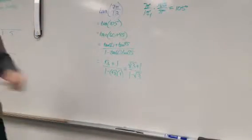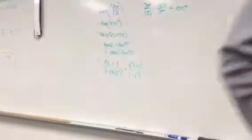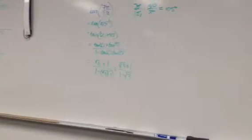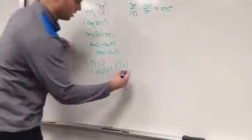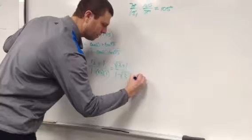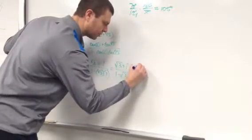You can't leave radicals in your denominator. So that's where you would multiply the top and the bottom by the conjugate of the denominator. So I'm going to multiply by 1 plus root 3, 1 plus root 3.